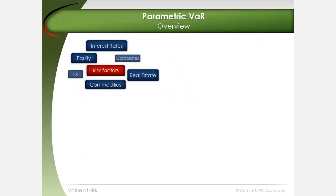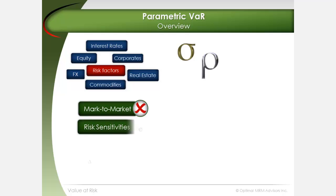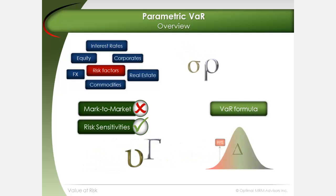Parametric VAR explicitly uses historical risk factor volatility and correlation applied to investment positions in a closed-form solution based on modern portfolio theory. Parametric VAR uses risk sensitivities instead of revaluation to estimate an investment position's PNL, and it marries risk sensitivities with elements of modern portfolio theory to measure portfolio VAR.